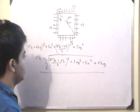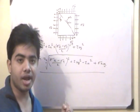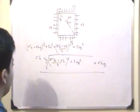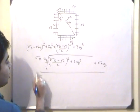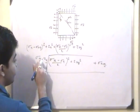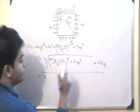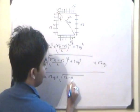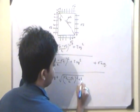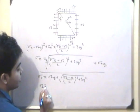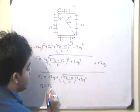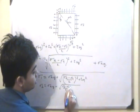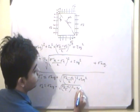Principal stresses occur when shear stress is equal to zero, so tau n must equal zero and we omit that term. The maximum value, sigma 1, equals sigma average plus the square root of (sigma x minus sigma y)/2 whole squared plus tau xy whole squared. And sigma 2, the minimum value of normal stress, equals sigma average minus that same square root.